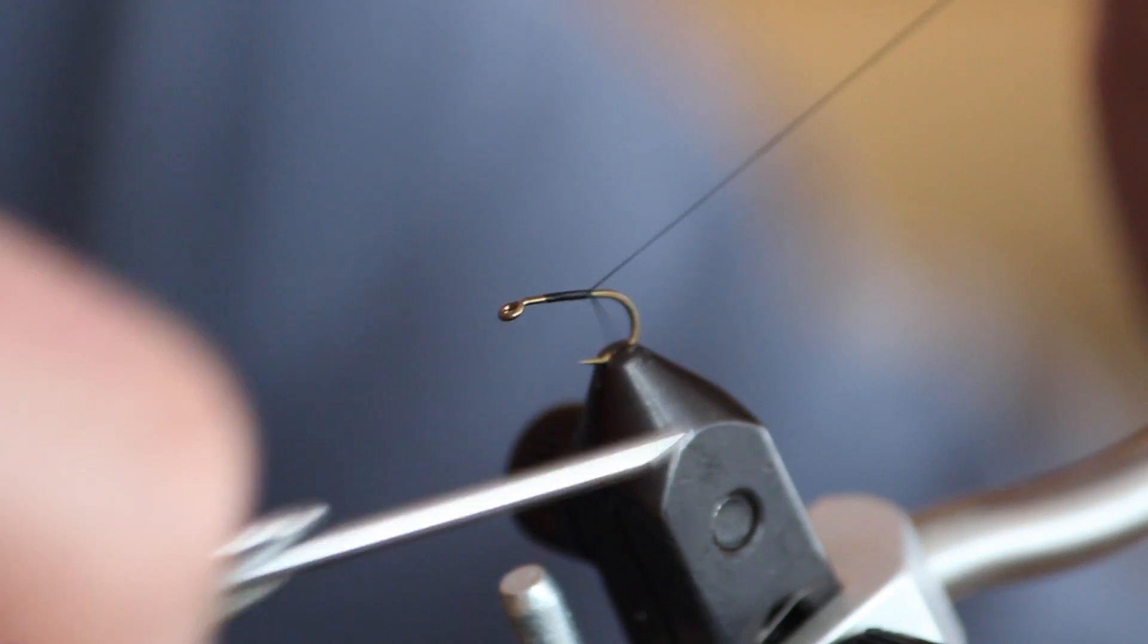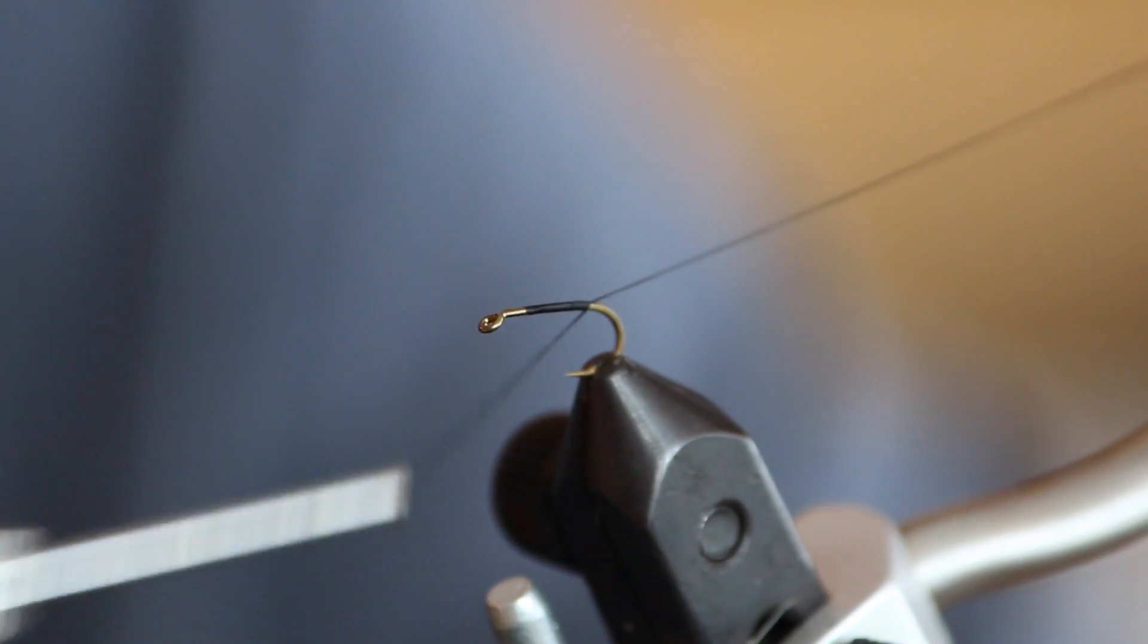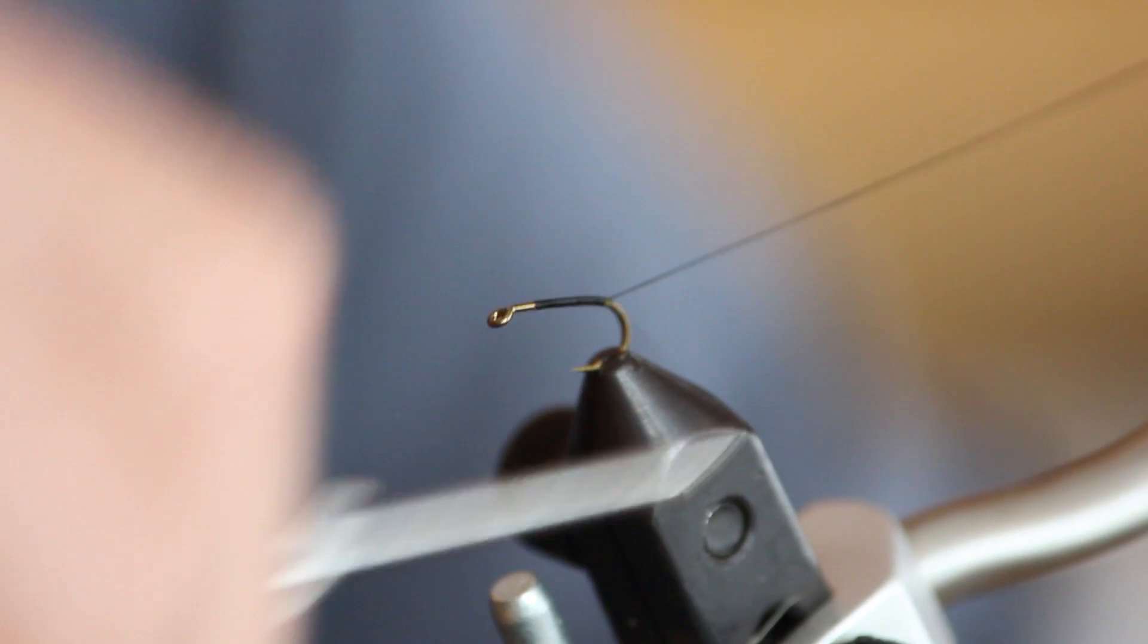Make thread wraps tight and secure towards the bend of the hook. Make sure to leave a 3-4 inch tag end and pull it tight while making these thread wraps.